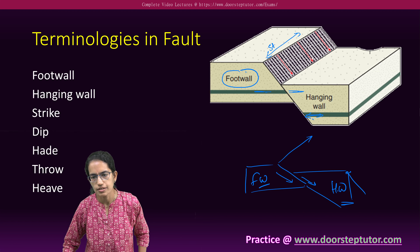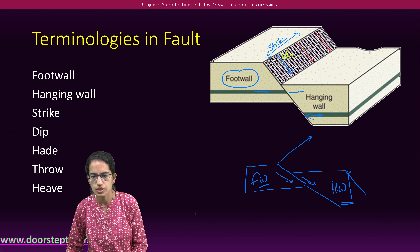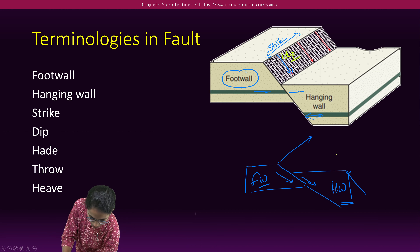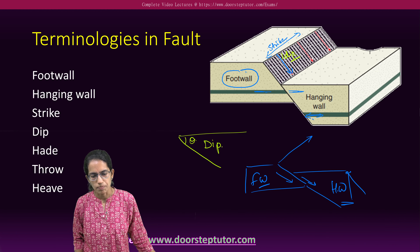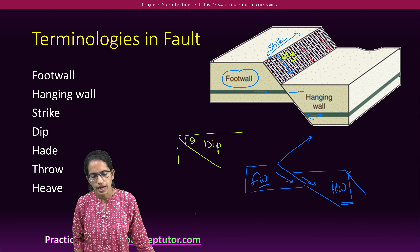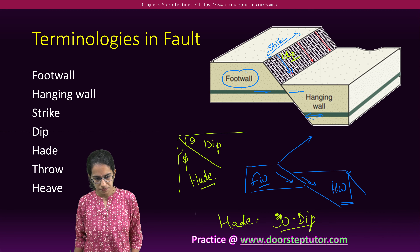Another important term: with the surface, this component is called strike, with reference to north and south. Perpendicular to the north-south direction is called dip. The dip angle is perpendicular to the strike and makes an angle with the surface. The other angle formed, other than dip, is known as hade. Hade is nothing but 90 minus the dip angle.